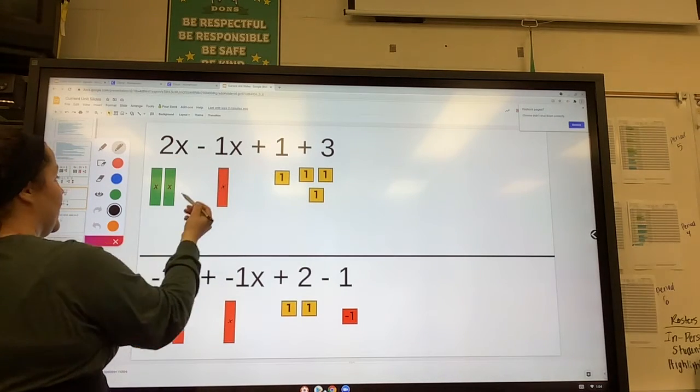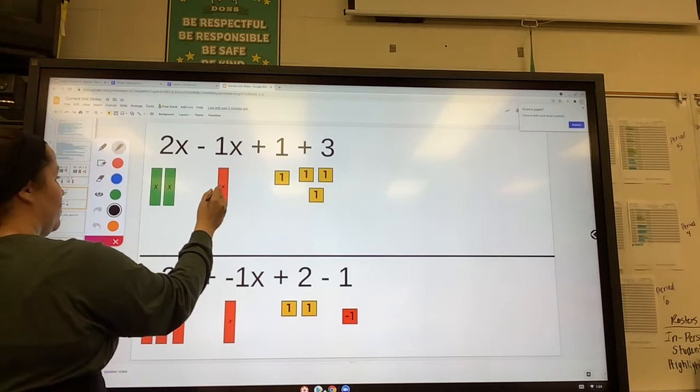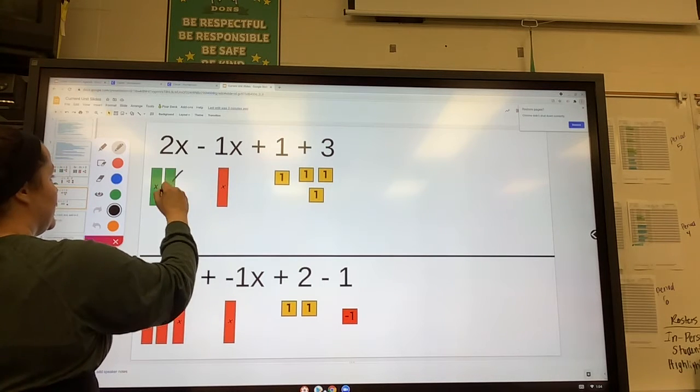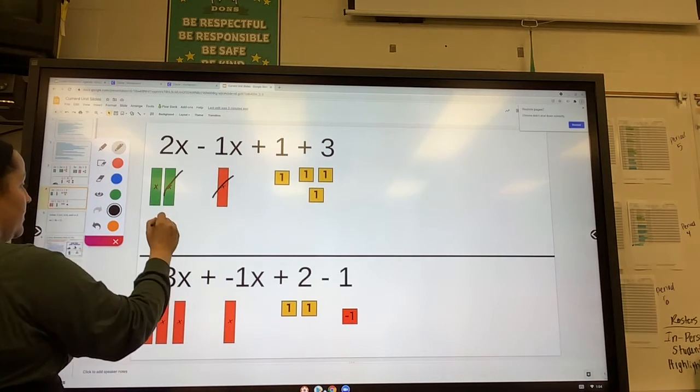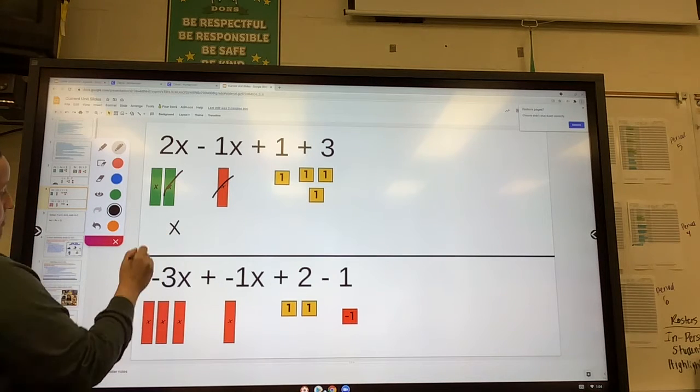So we have 2x minus 1x. We have 2x's here and 1 negative x here. So we can cancel out 1 and 1 until we're left with 1x, which is just x.